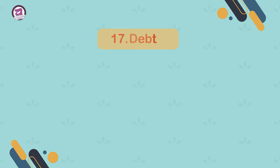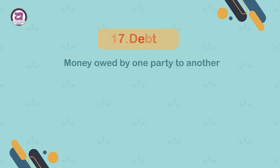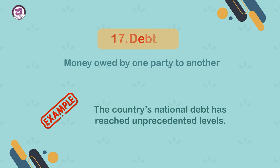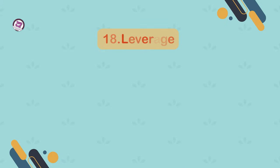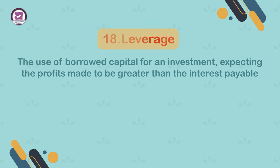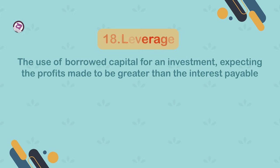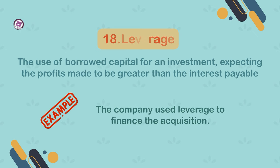17. Debt. Money owed by one party to another. Example: the country's national debt has reached unprecedented levels. 18. Leverage. The use of borrowed capital for an investment expecting the profits made to be greater than the interest payable. Example: the company used leverage to finance the acquisition.